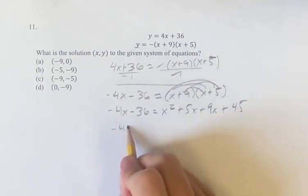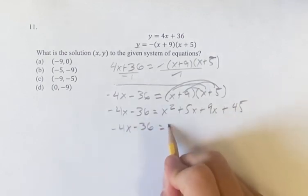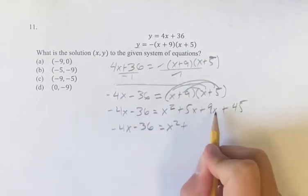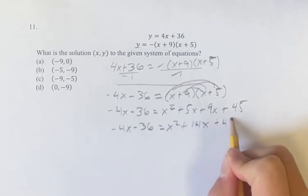Continuing on, I think it's 4x minus 36 is equal to x squared plus 5x plus 9x is 14x plus 45.